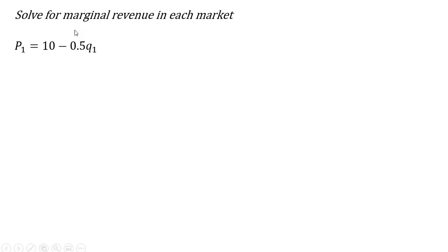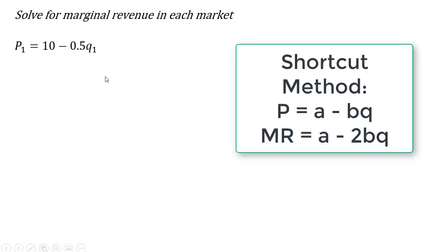We want to solve for the profit maximizing price and output level in each market. We're going to do that by first solving for the marginal revenue in each market. In market one, here's the inverse market demand. I'm going to use the shortcut method to get marginal revenue — marginal revenue is just the inverse market demand with a slope that is twice as steep. So instead of minus 0.5, we multiply that by two to get the marginal revenue equation. Notice marginal revenue looks like the inverse demand but the slope is twice as steep.